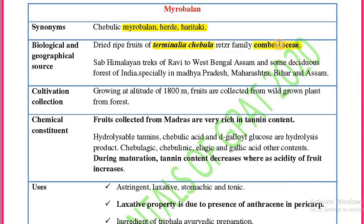It is found all over India — in sub-Himalayan tracts of Ravi, West Bengal, and some deciduous forests of India, especially in Madhya Pradesh and Maharashtra.